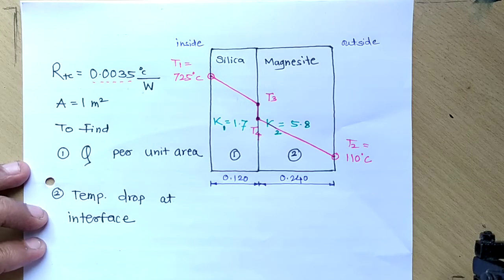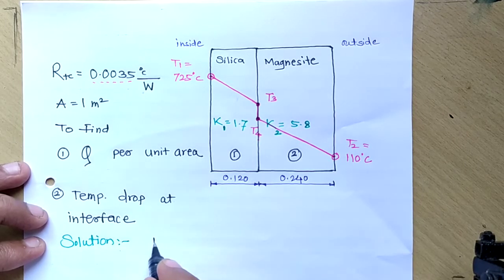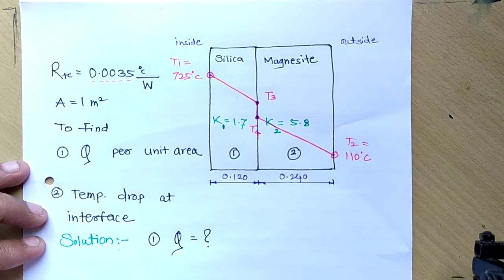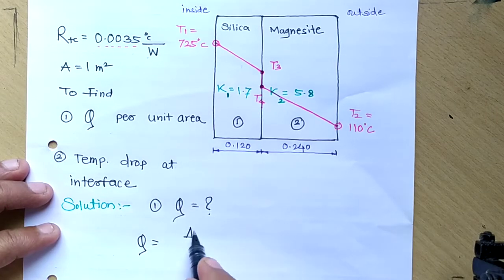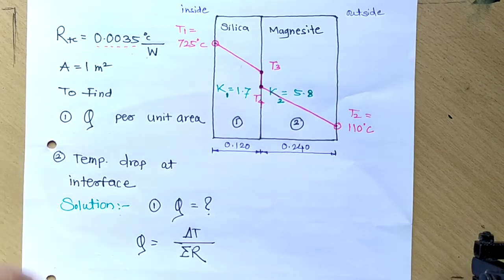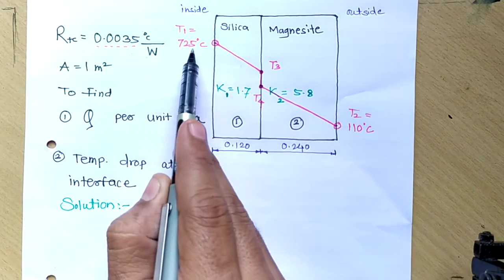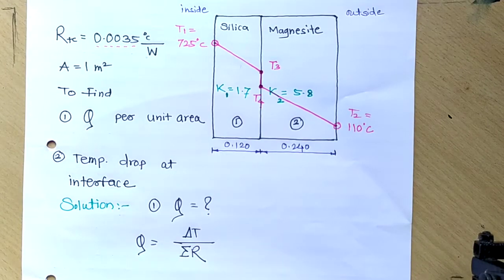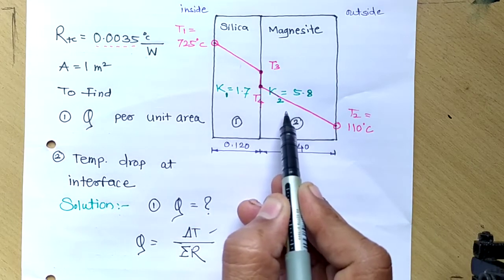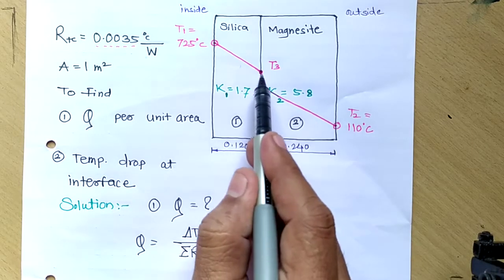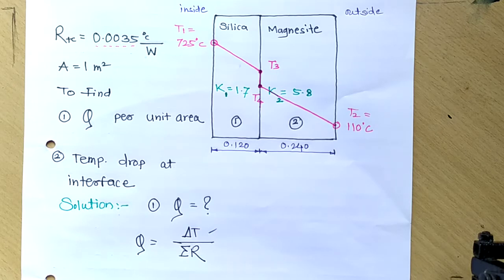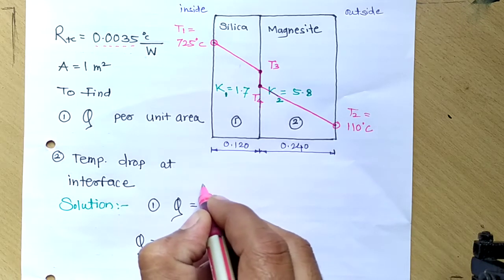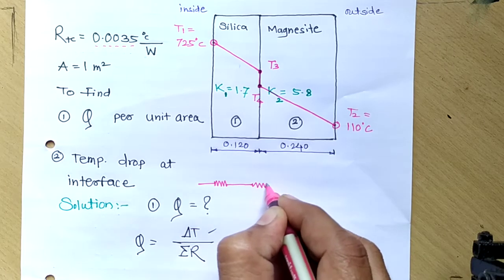Now let's go to the solution. First we determine q. We use the standard formula: q = ΔT / (summation of resistance). Delta T is the higher temperature minus the lower temperature: 725°C minus 110°C. For the summation of resistances, there are two conductive resistances (solid walls) plus the thermal contact resistance, giving us three resistances in total.